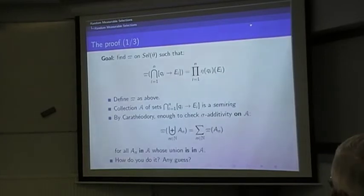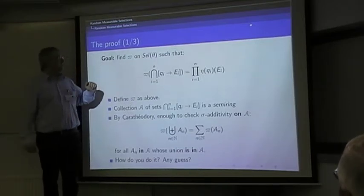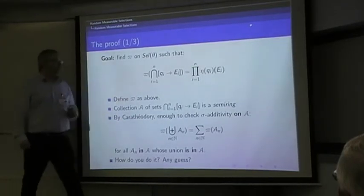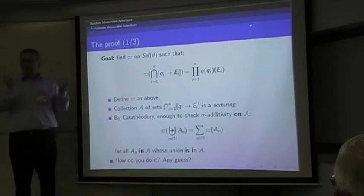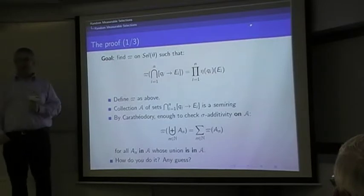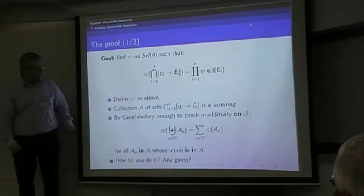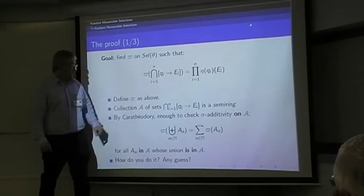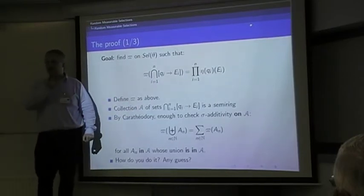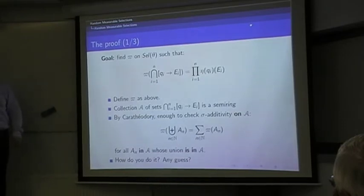Here's the proof. The goal is to find pi such as this holds. So define it this way. The sets of this form form what is called the semi-ring in measure theory. That is exactly what you need to use Carathéodory's extension theorem. Now Carathéodory tells you, to show that this actually defines the measure, you need to check sigma additivity. But sigma additivity not on the whole sigma algebra, just on those particular sets. Which means that if you take any countable sets a_n which are in this semi-ring, and whose union is again in semi-ring, then you need to show that the measure of the union is the sum of the measures.